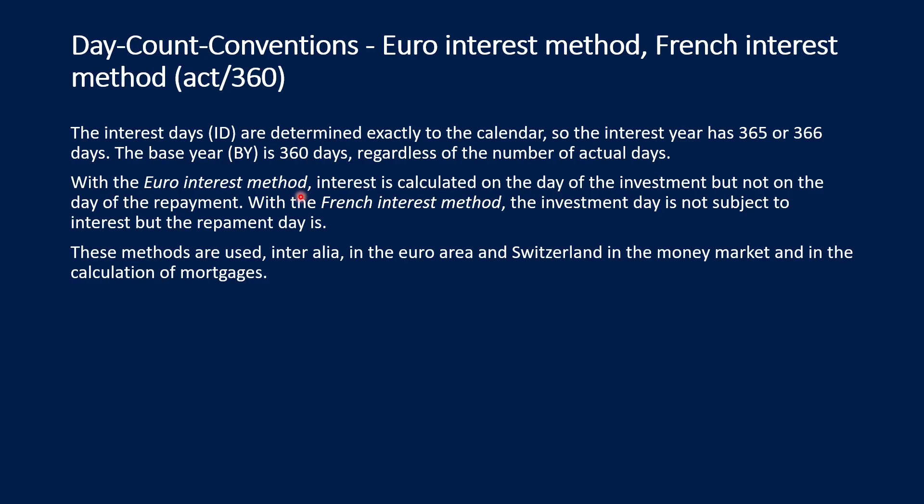With the Euro interest method, interest is calculated on the day of the investment but not on the day of repayment. With the French interest method, the investment day is not subject to interest but the repayment day is — so there is a small difference between the two. These methods are used in Italy, the euro area, and Switzerland in the money market and in the calculation of mortgages.